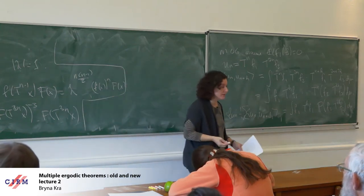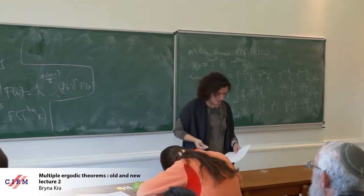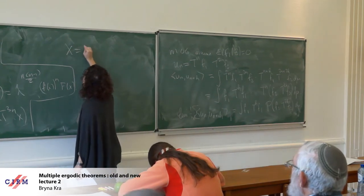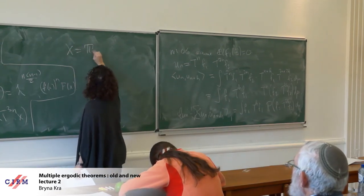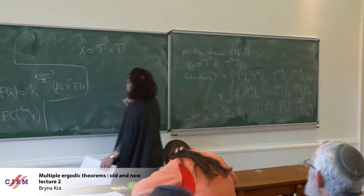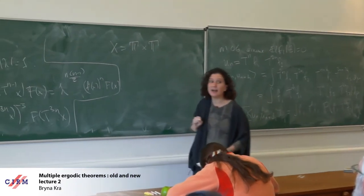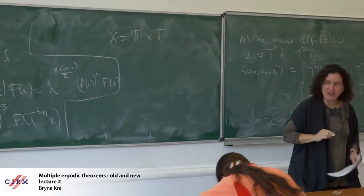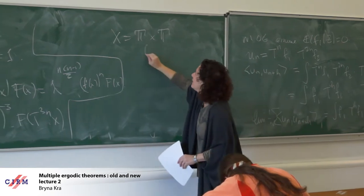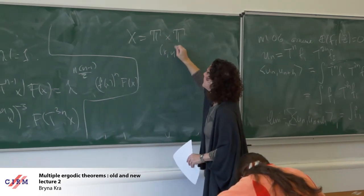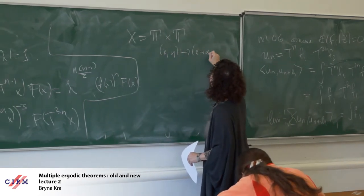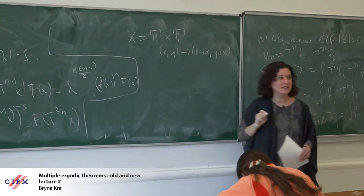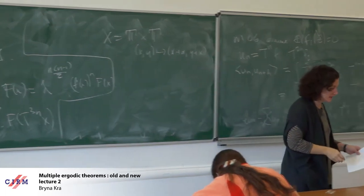I should give you some examples of a nil system, but actually I already have. On the two-torus, the map (x, y) maps to (x + alpha, y + x) is one of the simplest examples of a nil system. It's easy to check when this is ergodic — ergodicity is equivalent to alpha being irrational, just like in the Kronecker factor.